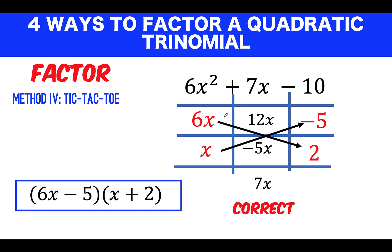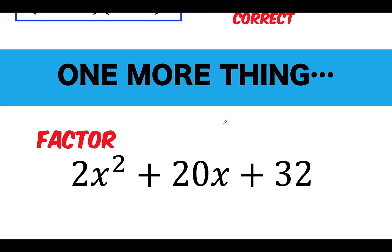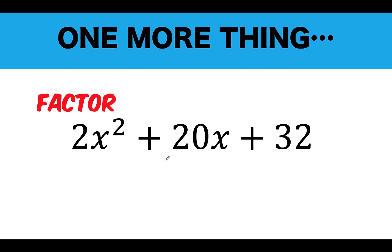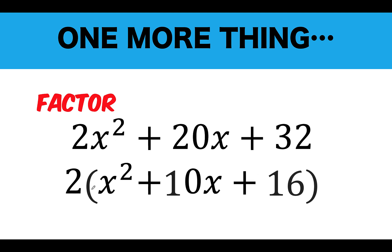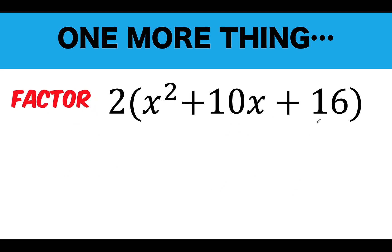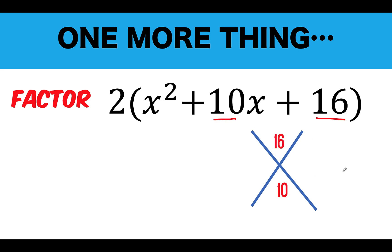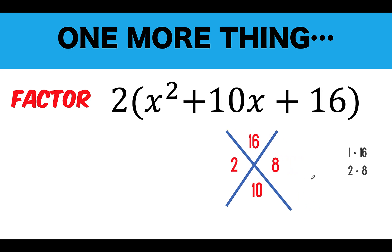Whatever method you use, you arrive at the same result. There is one more important point: when there are common factors — for example, 2 is common among all three terms — always factor out the common factor first before applying any of the four methods, especially methods two and three, or you will get a wrong answer. So factor out 2 first, then factor the remaining trinomial x² + 10x + 16. Using method 1, AC = 1 × 16 = 16, B = 10, and the factor pair is 2 and 8.